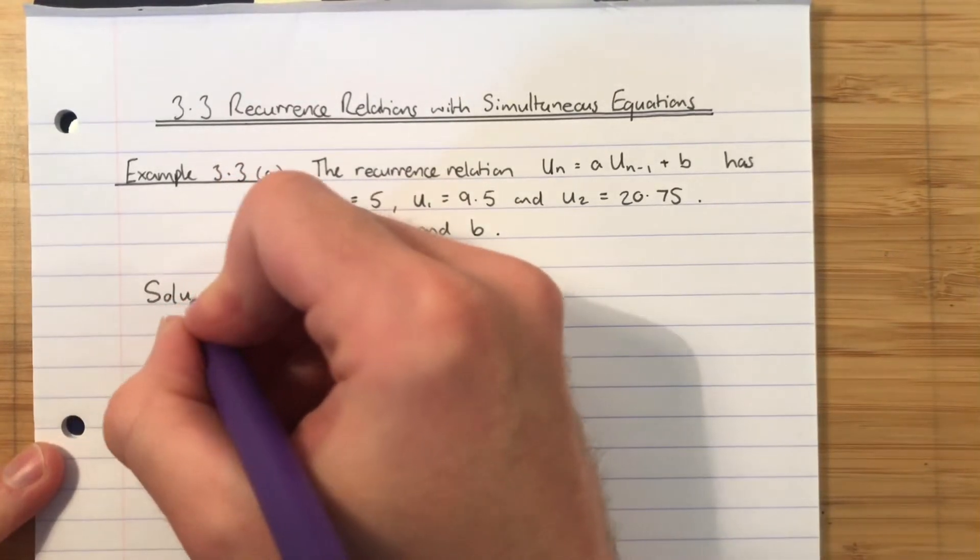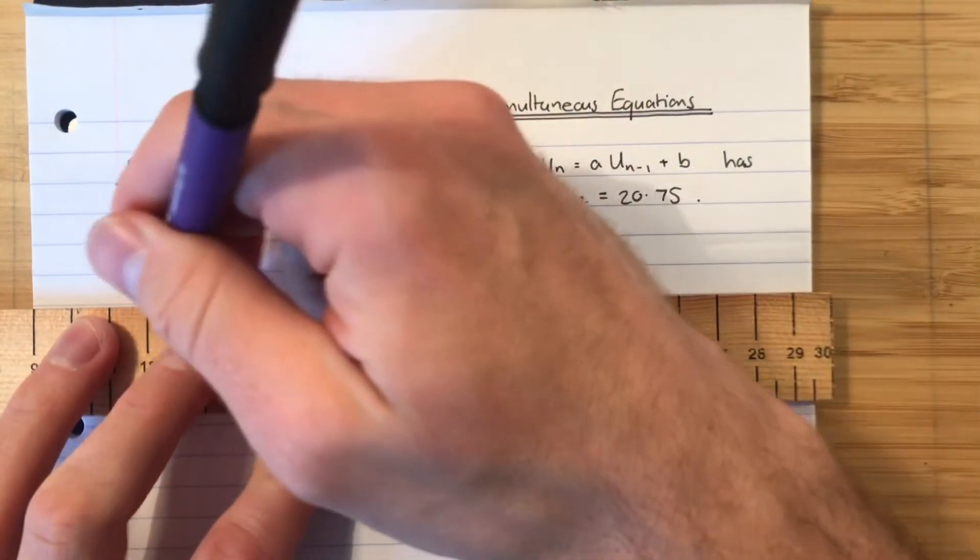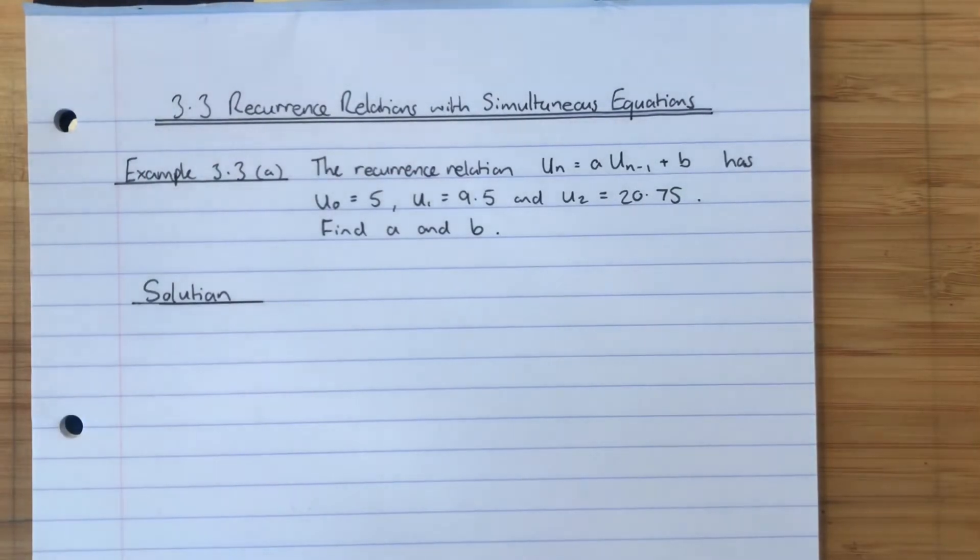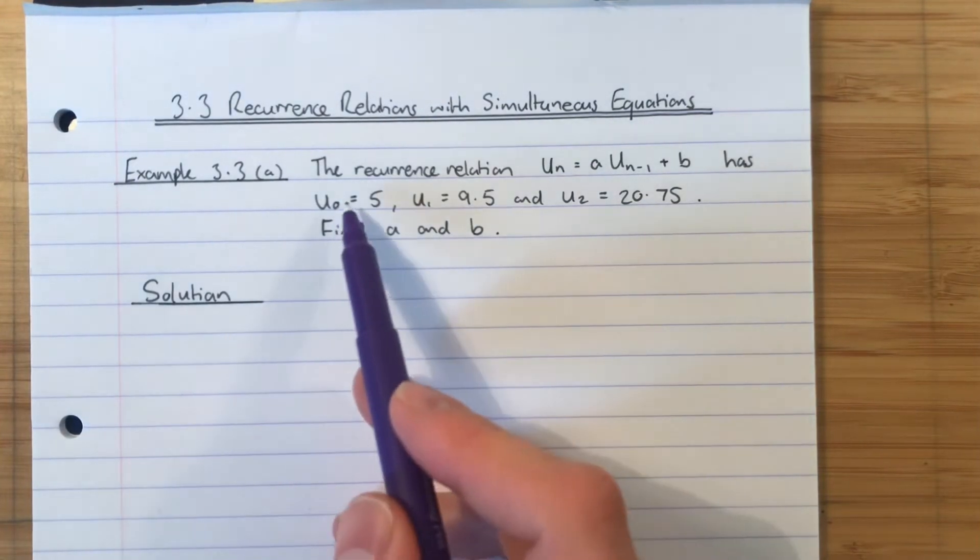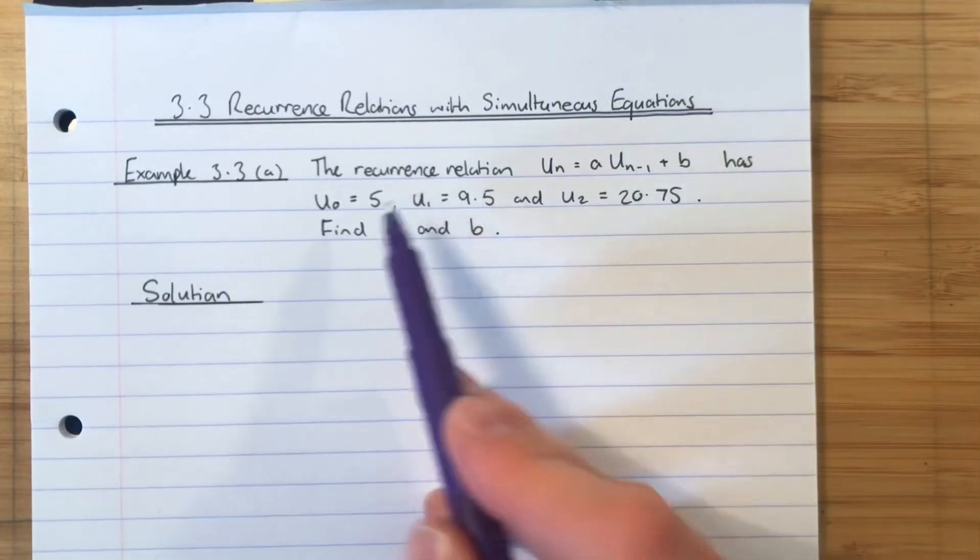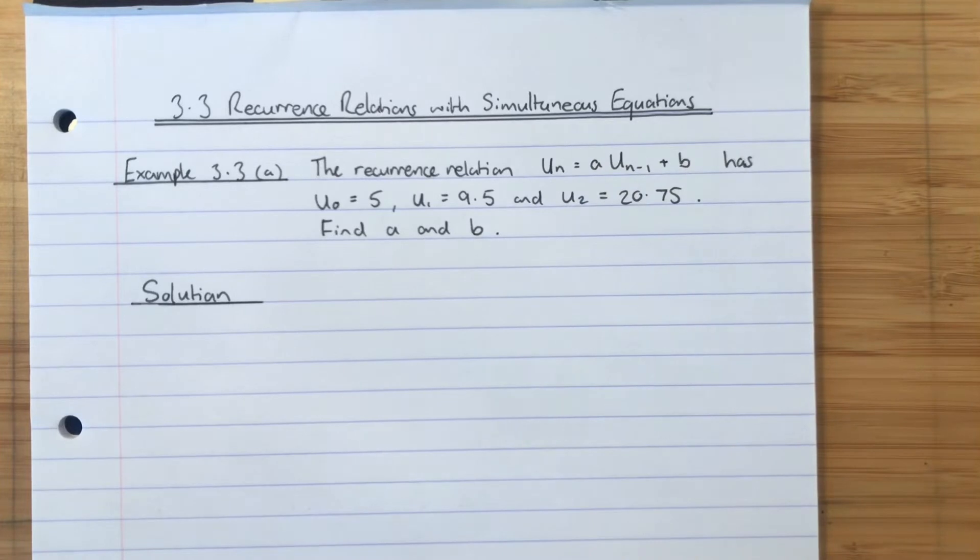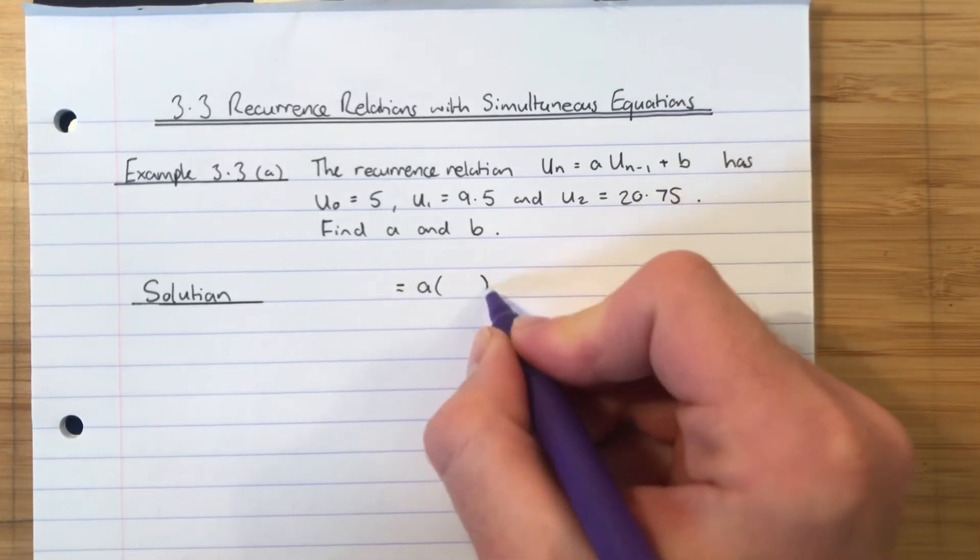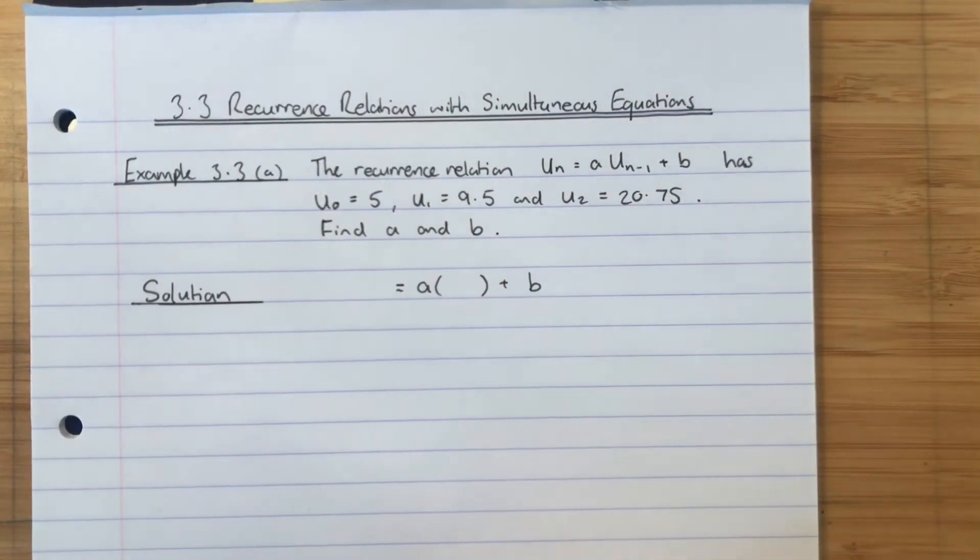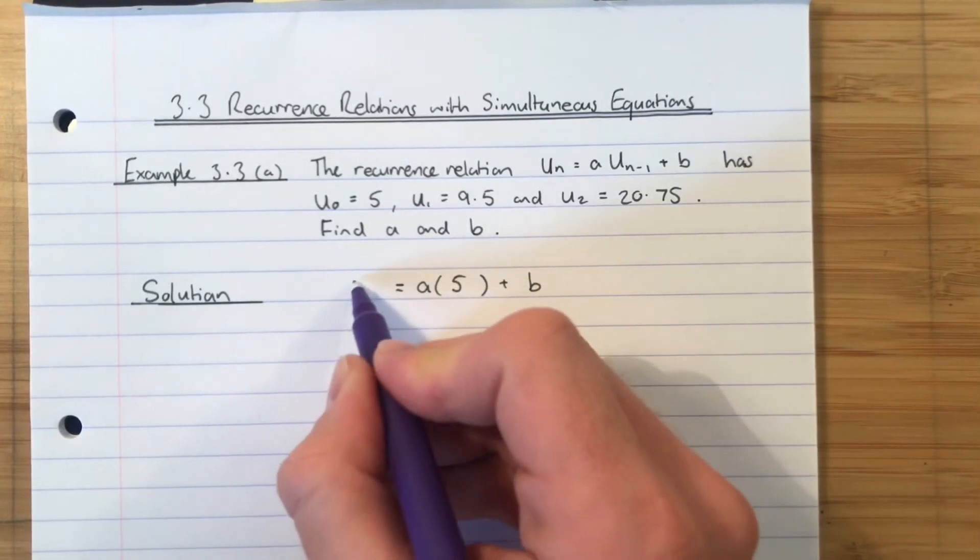Solution. So we want to create two equations here. We want to create two equations using these three terms. So what we know is if I sub U_0 into this recurrence relation, if I put 5 in there, then the next term that I get out must be U_1, which is 9.5. So let's just leave blanks. Let's just say that's the next term A times the previous term. Add B. So you should agree with me that if I sub U_0 into here, then if I processed all of that, the next thing I would get out would be 9.5.